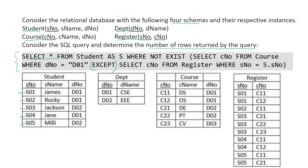We will take the instances from the student table one by one and see what result is given by the inner subquery, adding matching tuples to our answer. For the first student S01 James D01, we execute SELECT C_number FROM course WHERE D_number is D01. This gives us C11 and C12.